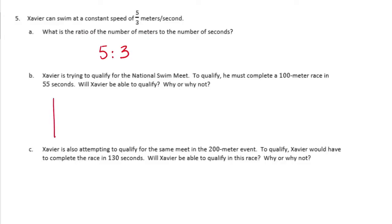So this time I'll just do a chart. So we have 5 to 3. And that was meters per second. So 5 meters in 3 seconds. But he needs to complete a 100 meter race in 55 seconds. So I'm going to put in 100 meters and see how long that would take him to complete. To get from 5 to 100 we need to multiply by 20. So we need to do the same thing to get an equivalent ratio. That would make this 60.